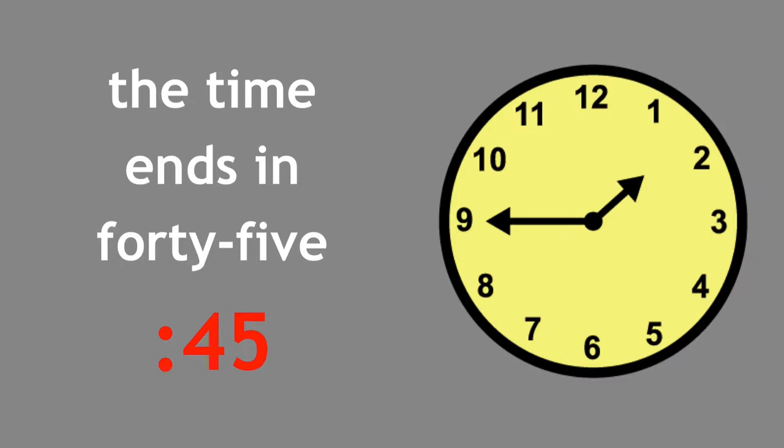In a previous video called Telling Time, we already worked on telling time to the hour, so we know that when the big hand points to the twelve, the time ends in o'clock. Now in the chorus of this song, we're working on fifteen minute increments, so we're adding additional numbers that the big hand can point to: three, six, and nine, and the corresponding numbers that will make the time end in. Up next is the verse of the song. We follow the pattern that we used in the previous video.